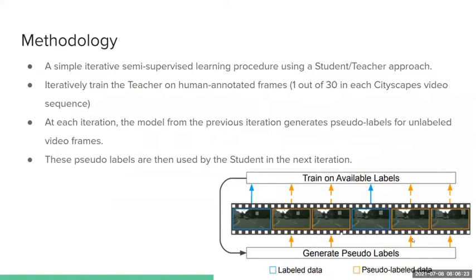The methodology of this paper is a semi-supervised learning approach using a student-teacher type system. You train the teacher on actual manually annotated frames, which is one out of 30 in Cityscapes. At each iteration, the model from the previous iteration generates pseudo labels for the unlabeled frames in the dataset, and these pseudo labels are used by the next student in the next iteration.